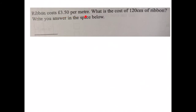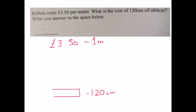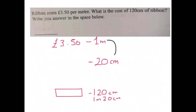Ribbon costs £3.50 per metre. What is the cost of 120 centimetres of ribbon? Write your answer in the space below. We're initially told that for £3.50 we can get one metre of ribbon and we need to find the cost of 120 centimetres. Let's work out the cost of 20 centimetres, because 120 is just one metre and 20 centimetres. One metre is 100 centimetres; divide that by five and you get 20. So if I divided my length by five, I must divide my price by five.